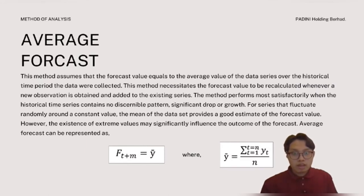The second method is average forecast. This method assumes that the forecast value equals to the average value of the data series over the historical time period the data were collected. This method performs when the historical time series contains no desirable pattern, significant drop or growth. For series that fluctuate randomly around a constant value, the mean of the dataset provides a good estimate of the forecast value. However, a presence of extreme values may significantly influence the outcome of the forecast. Average forecast can be represented as FT+M equal to total of YT divided by total number of observations in the time series.